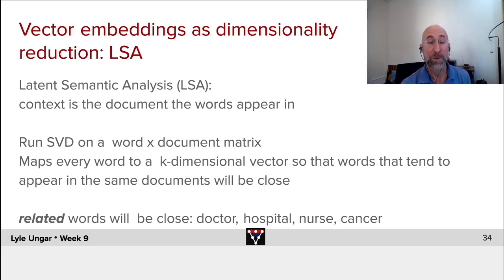And we will then get a reduced dimension principal component, or singular value decomposition, that maps each of my million words to, say, a 300-dimensional vector, k-dimensional vector, such that words that tend to show up in the same documents will be close in that embedding.